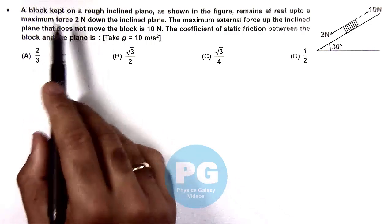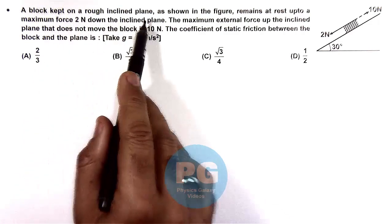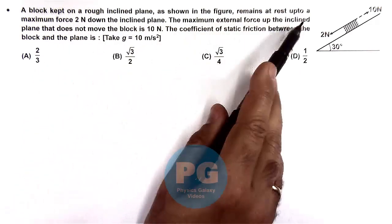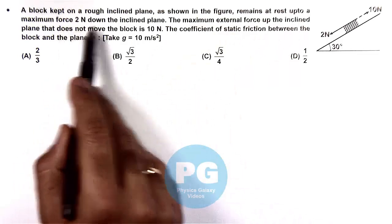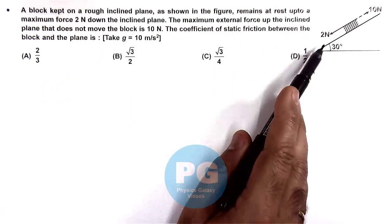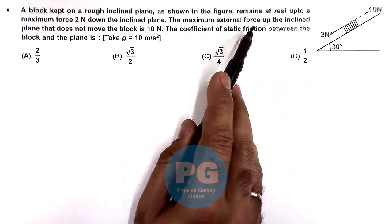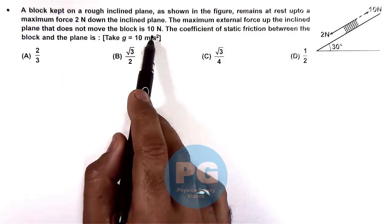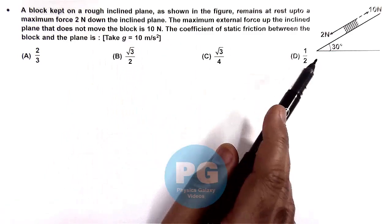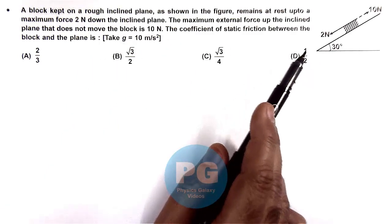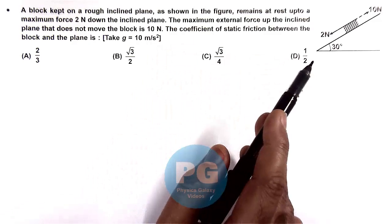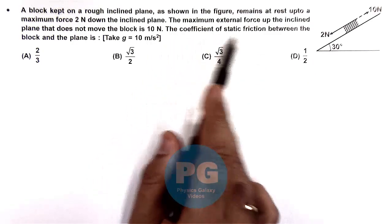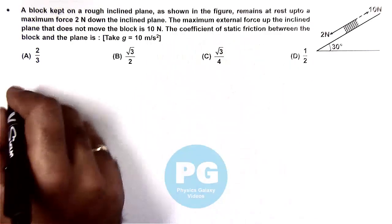In this question, a block kept on a rough inclined plane remains at rest up to a maximum force 2N down the inclined plane, and the maximum external force up the inclined plane that does not move the block is 10N. These are the forces at which friction will be maintained at limiting friction so the block does not move. The question asks for the coefficient of static friction between the block and plane.